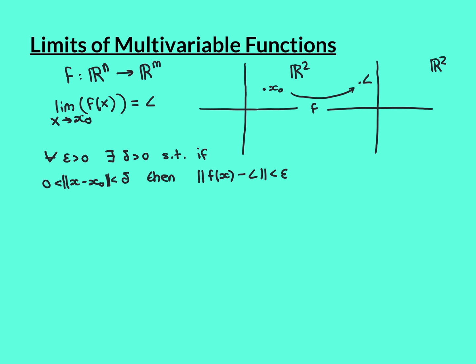So, you take any point where the distance from x0 is greater than 0 but less than delta, then the distance between what x is being mapped onto by the function — so f of x, which is a vector — and our limit vector L is less than epsilon. We can imagine drawing an epsilon disk around our limit vector L. What this says is that there must exist a delta disk around x0 such that everything apart from the centre point is mapped onto that epsilon disk around L, and that must hold true no matter what epsilon you pick.